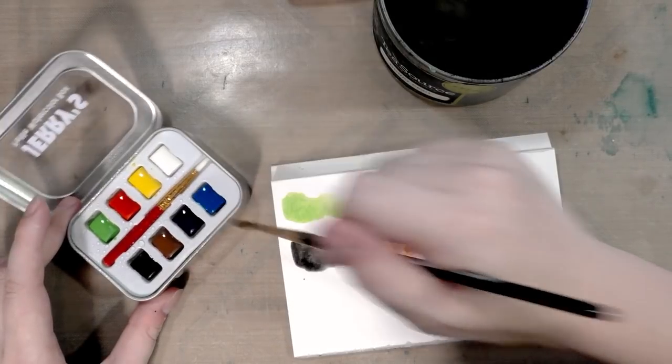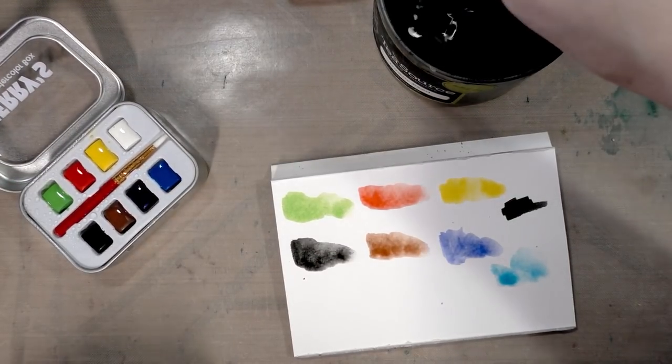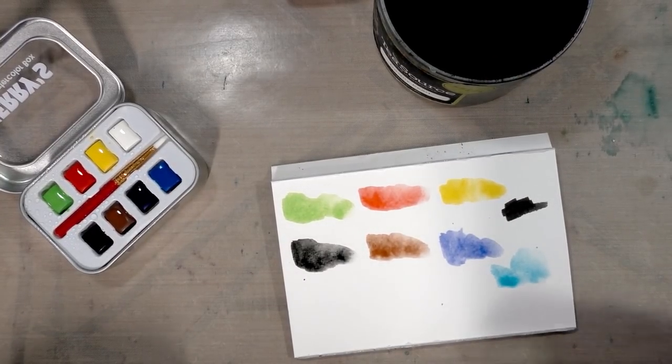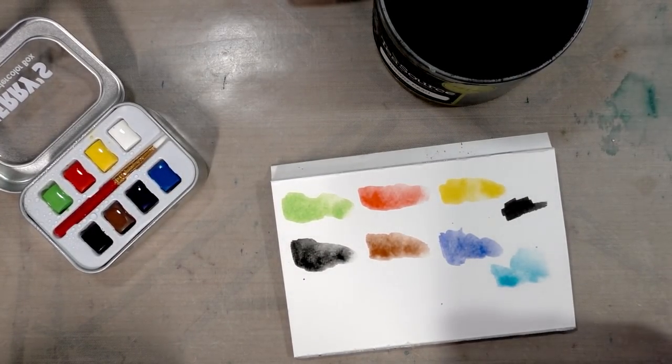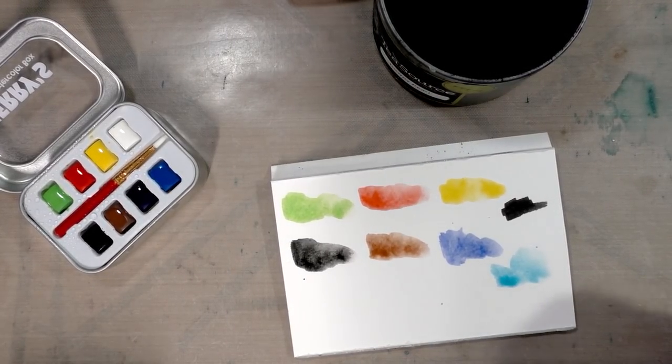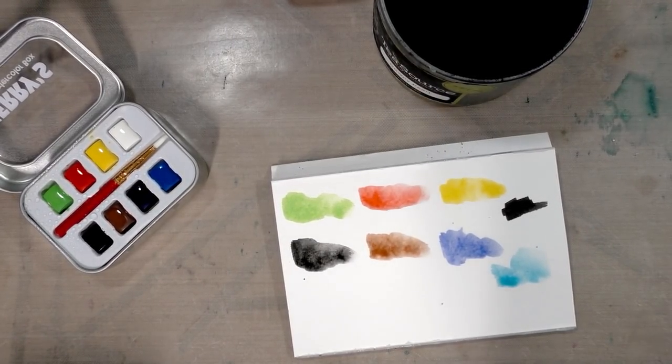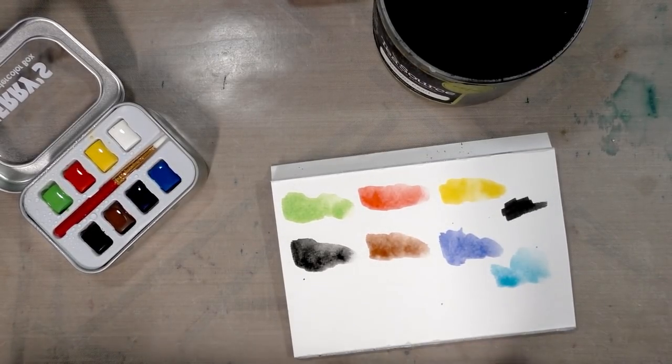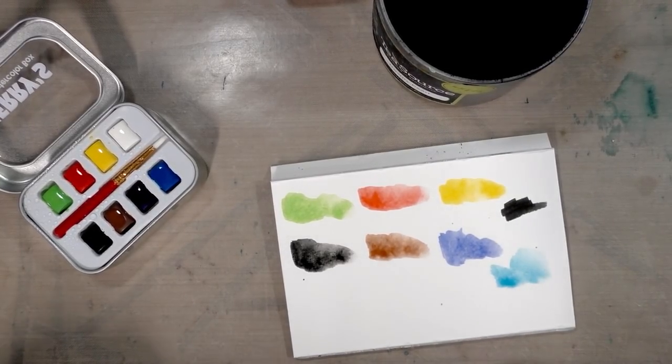So this is an unusual set in that usually with artist grade mixing sets you're going to get a warm red, a cool red, a warm yellow, cool yellow, a warm blue, cool blue, and then maybe a sepia or yellow ochre, maybe a black, maybe an indigo—generally colors that will help you mix other colors a little more effectively. Often you'll get a dioxazine purple.